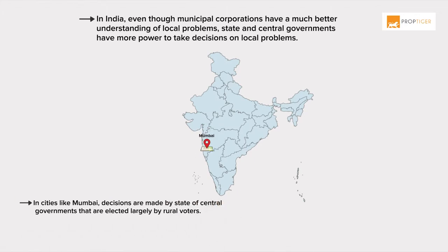In cities like Mumbai, even though there is a broad consensus within Municipal Corporations and the city on what needs to be done, decisions are made by state or central governments that are elected largely by rural voters.